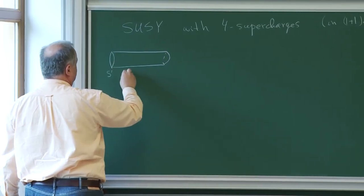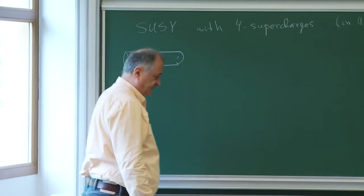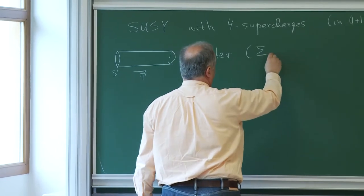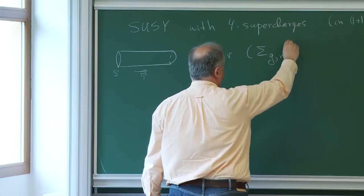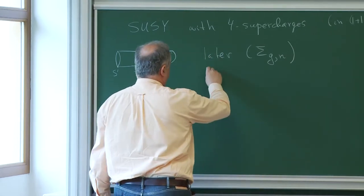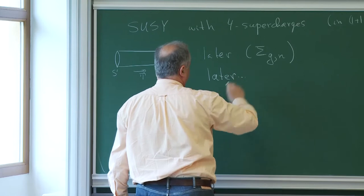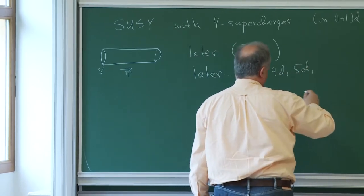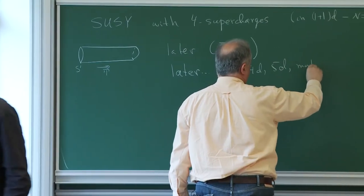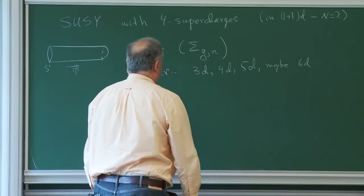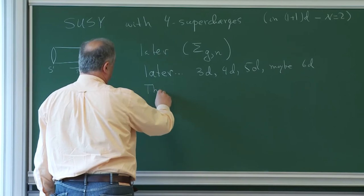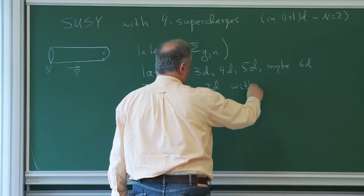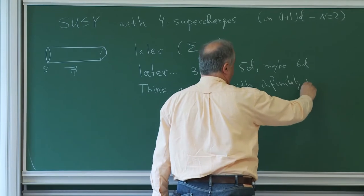So this is a circle and this will be the time direction. But later, there will be lots of discussion when this is an arbitrary surface with genus G and N punctures. And later, there will be three-dimensional, four-dimensional, five-dimensional, and maybe even six-dimensional theories, which I will think of as two-dimensional theories with infinitely many fields.